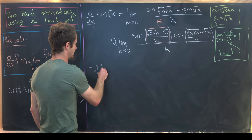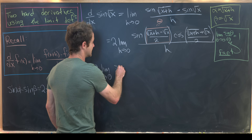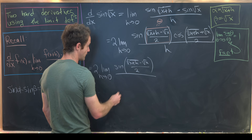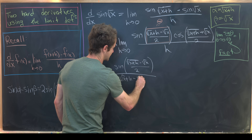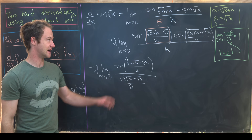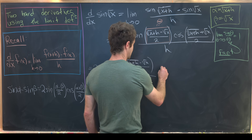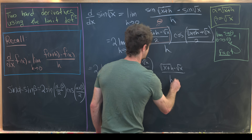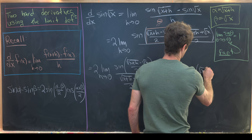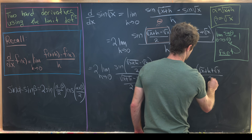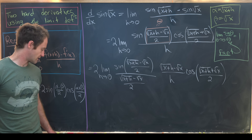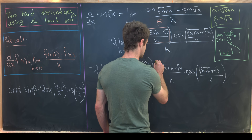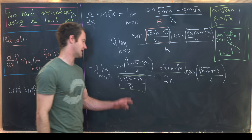That gives us 2 times the limit as h goes to zero of: [sin((√(x+h) - √x)/2) / ((√(x+h) - √x)/2)] times [(√(x+h) - √x) / (2h)] times cos((√(x+h) + √x)/2). We included the θ term in the denominator, and to compensate we placed it in the numerator as well, along with the necessary 2h factor to counteract the two.